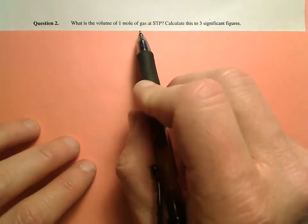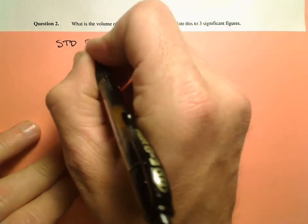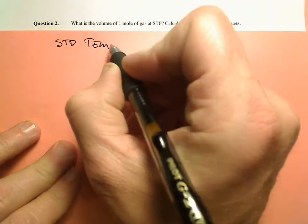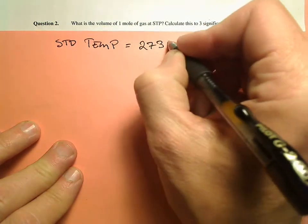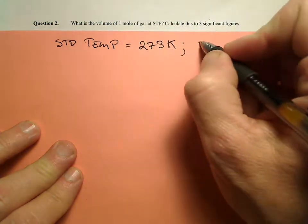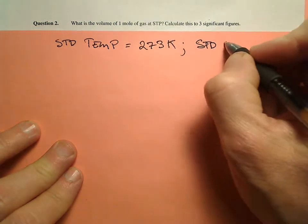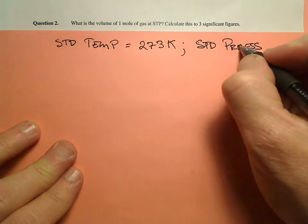Well, we have one mole of gas at STP. So STP, remember, standard temperature and pressure. Standard temperature is 273 kelvins, or zero degrees Celsius. And standard pressure,